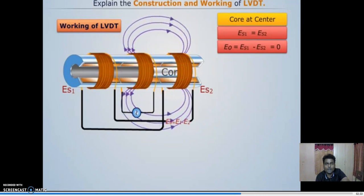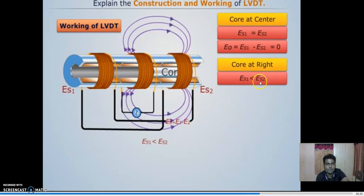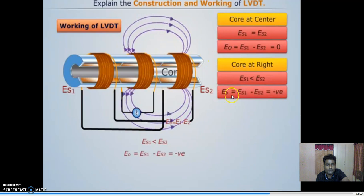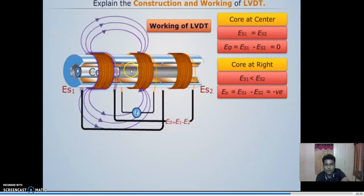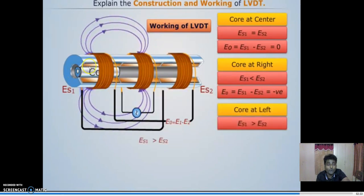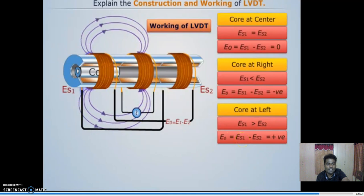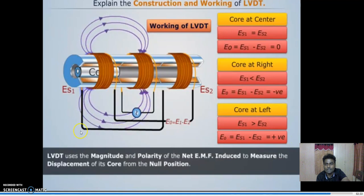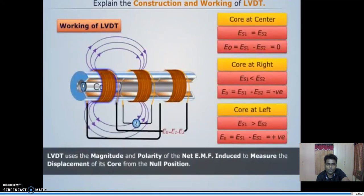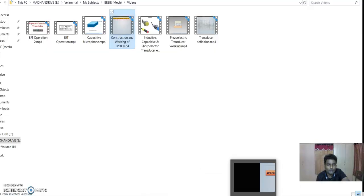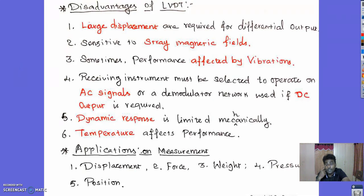When the core is moved towards the right side, ES2 becomes greater than ES1. When moved towards the left, ES1 becomes greater than ES2 and the output voltage ES1 − ES2 is positive. Thus, LVDT uses the magnitude and polarity of the net induced EMF to measure the displacement of its core from the null position. This video explains the construction and working of the LVDT.